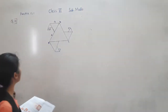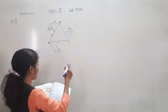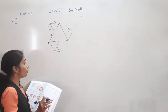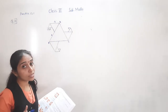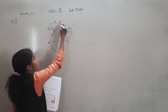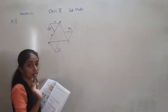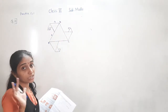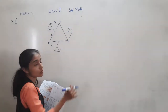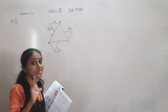Question number 11 from exercise 13.1. In the figure, all triangles are equilateral. Equilateral triangle means all sides are equal. So for triangle ABC, all sides are equal — it is given that all these triangles are equilateral. Whatever triangle is there, all sides are equal.